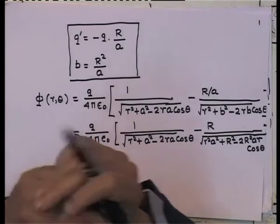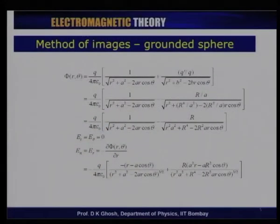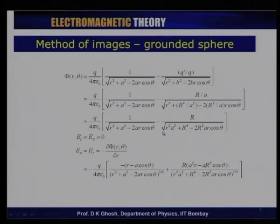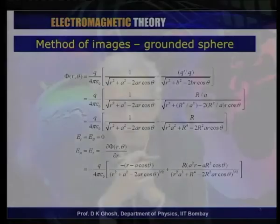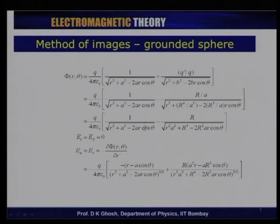Notice that the tangential component of the electric field must equal zero, which is guaranteed here if you take the differentiation with respect to θ and put r = R — the two terms cancel out. I also need the normal component, which is simply d/dr of the potential, giving a term to the power 3/2 in the denominator, and I am differentiating with respect to r, getting 2r − 2a cosθ.